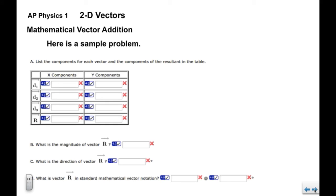Now we also have listed a table for each of the components. Here are the three vectors we're going to add up, and here are spaces for rx and ry. And then down here we solve for the magnitude, the direction, and then standard vector notation.